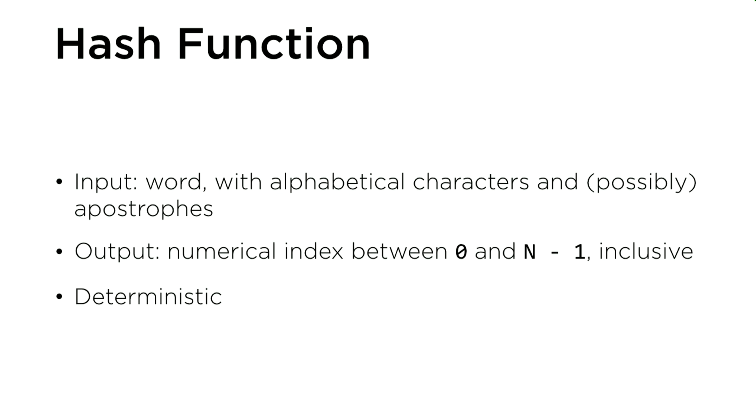So what does your hash function need to do? Well, it needs to take as input a word, and that word is going to have alphabetical characters and it may have apostrophes in it as well. And the output of your hash function is going to be a numerical index between 0 and n minus 1 inclusive.